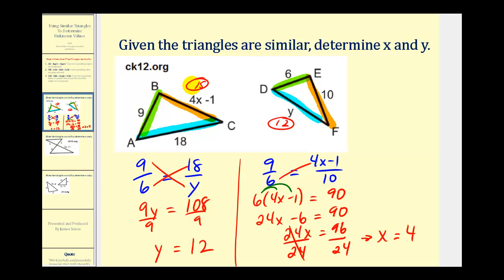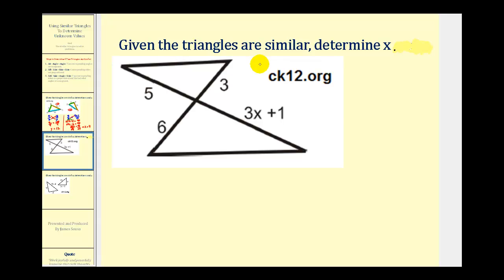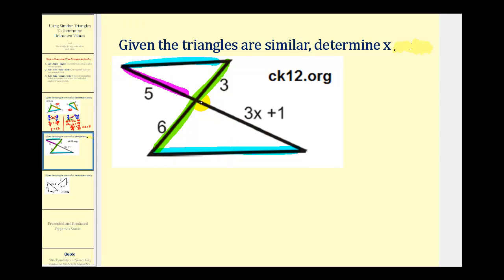Let's take a look at the next example. We're given the triangles are similar and we're going to determine the value of x. Let's start by identifying the corresponding sides. This side corresponds to this side — the two longest sides. This is the shortest side of the smaller triangle, and this is the shortest side of the bigger triangle. Therefore, this side here corresponds to this side here, and this is the information we need to determine our proportion.